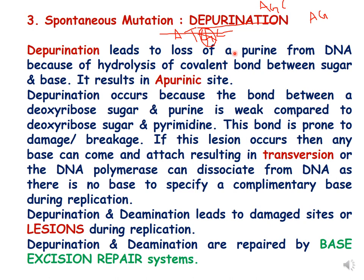Depurination happens because of hydrolysis of the covalent bond between the sugar and the base, and results in an apurinic site. It occurs because the bond between a deoxyribose sugar and a purine is weaker compared to the bond between deoxyribose sugar and a pyrimidine, so it is prone to damage or breakage. If this breakage occurs, any base can attach there, resulting in a transversion or transition event, or the DNA polymerase can dissociate from the DNA as there is no base to specify a complementary base during replication. Depurination and deamination lead to damage sites or lesions, and they are repaired by base excision repair systems.